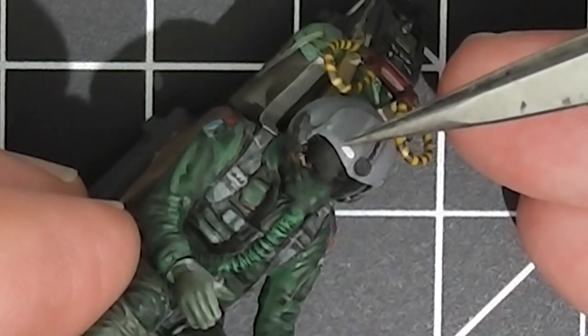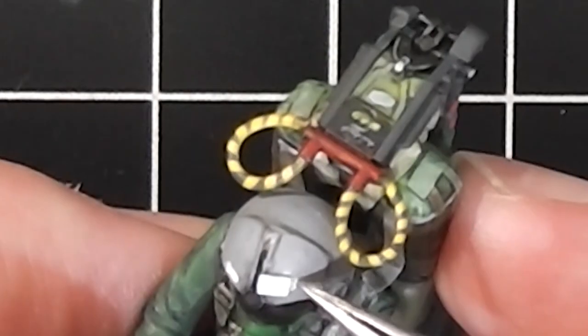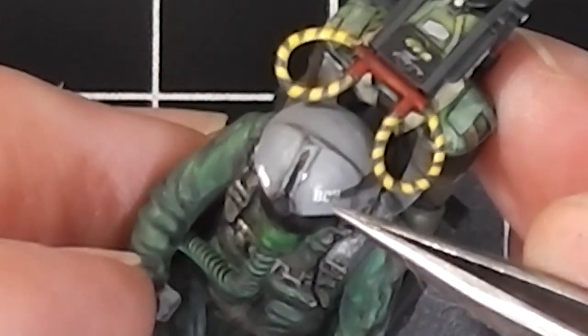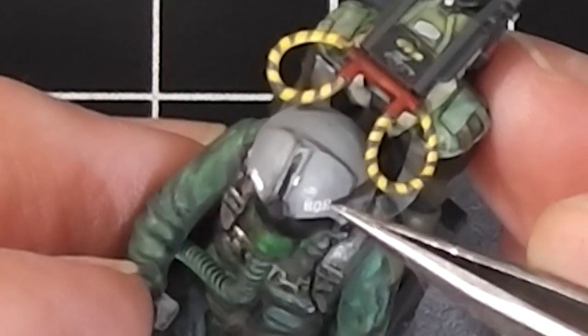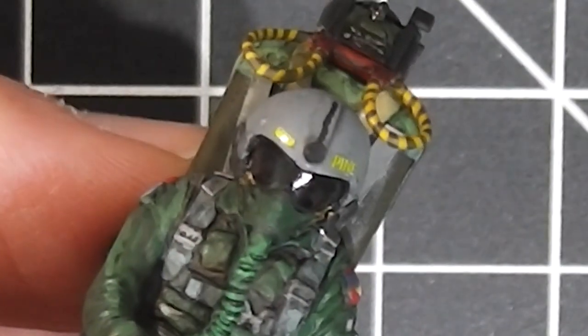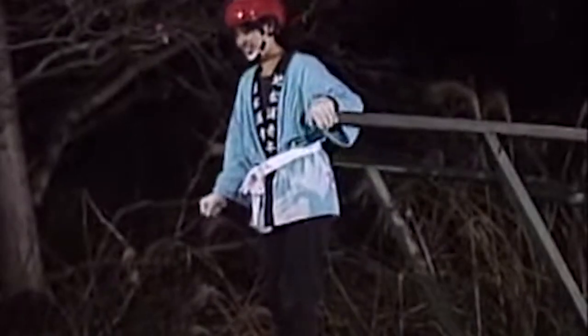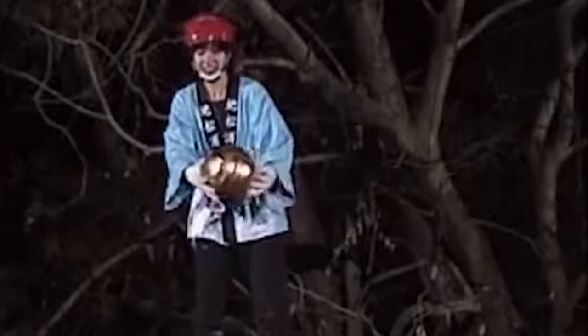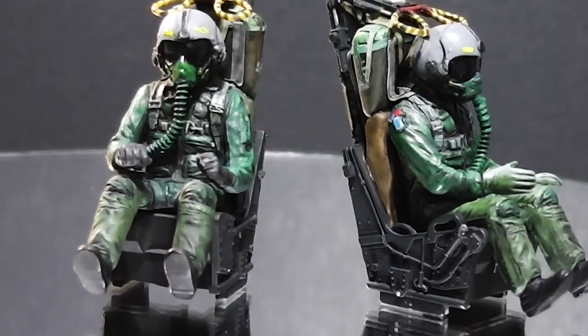The last detail was some decals for the helmets. White decals were printed up on clear decal paper with my very ancient Alps micro dry printer which can print white. Decals were then cut out and applied to the helmet and settled down with a little bit of Microsol. Once dry and with plenty of magnification, clear yellow was painted over the decals. By no means did I exactly paint over the decal. There was some paint on the gray helmet but the overpaint is so minimal and the decals are so small that the overpaint is not really visible. If anything it looks like a bit of shadow and highlights the decal.